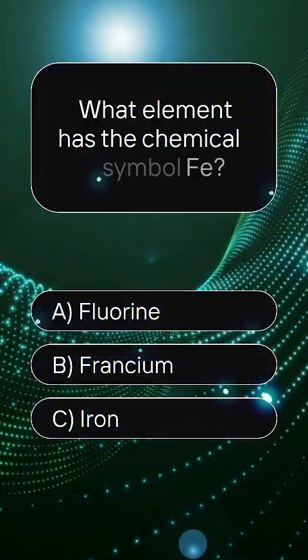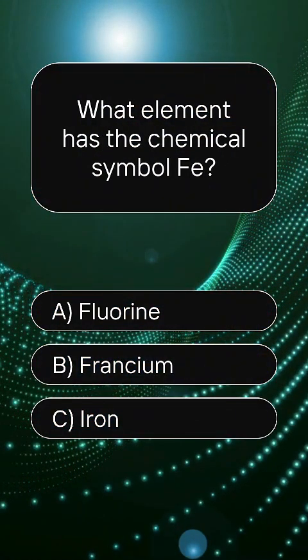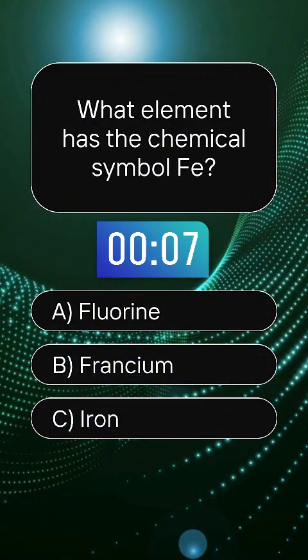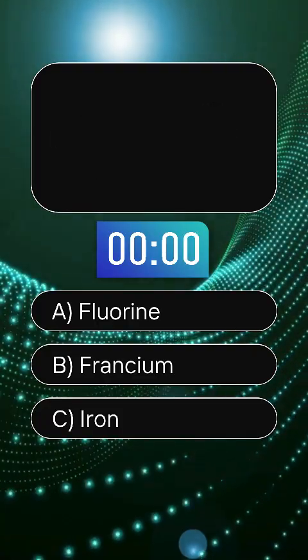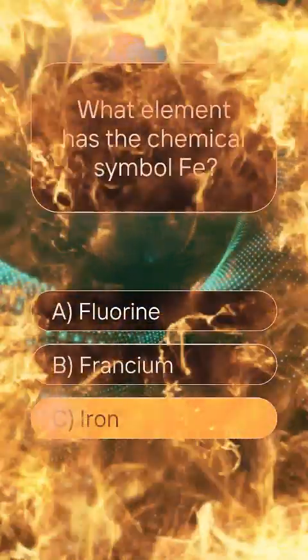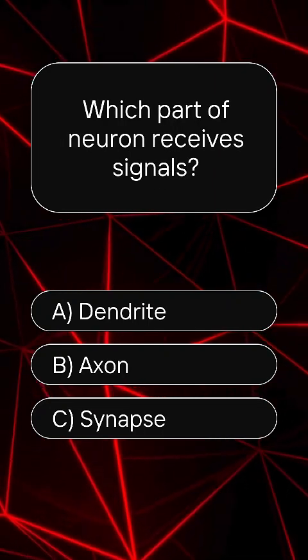What element has the chemical symbol Fe? Answer C: Iron. Which part of a neuron receives signals?